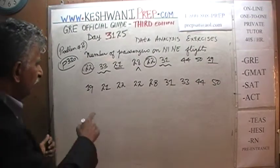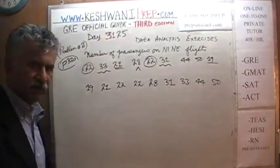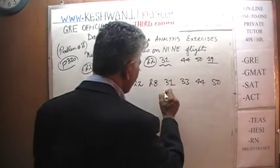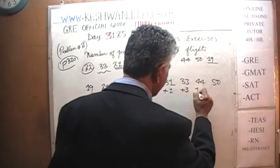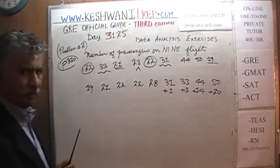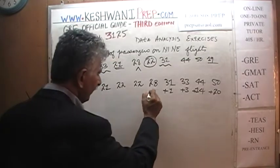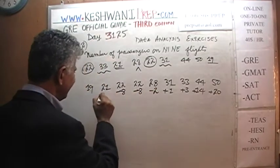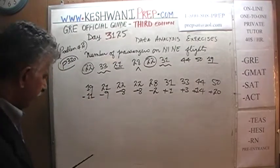Let's make sure I didn't mess up — we have 3, 3, and 3, so nine observations. Let's get going. Let's pretend the average is 30. If the average is 30, then we have a surplus of 1 here, a surplus of 3 here, a surplus of 14 here, and a surplus of 20 here. In terms of deficit, this value is 2 less than 30, this one is 8 less, 8 less, then 9 less, and then 11 less — a shortage of 11.